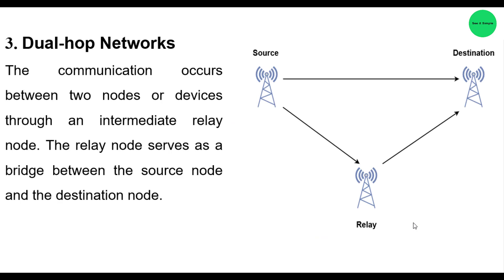The next type is the dual hop network. Dual hop means a basic three-node relay architecture — there is a source, a destination, and a relay added between them. As described, communication occurs between two nodes through an intermediate relay. This relay acts as a bridge between the source and destination nodes, helping to increase the signal power and send it back to the destination.